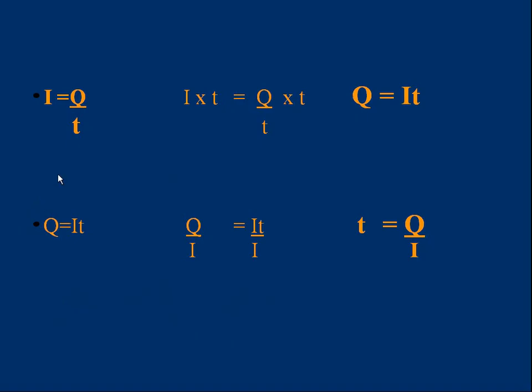Some students have a bit of a struggle at first rearranging equations. Let me just go through a couple of examples. If I is Q over T, how can I make Q the subject? Well, to get rid of the T under the Q, I've got to multiply by T. So I'm going to multiply both sides of the equation by T. Multiply the left side by T, and we get I times T. Multiply the right side by T, we get Q over T times T. The T's cancel, leaving Q by itself equals I times T. Q is IT.